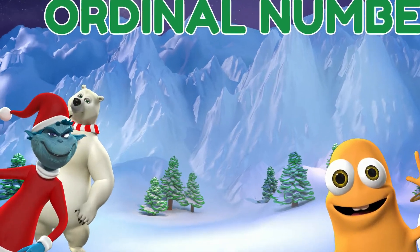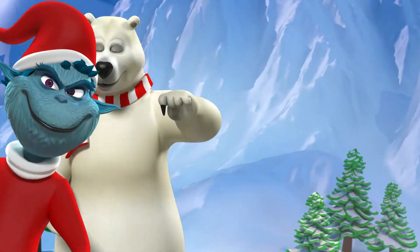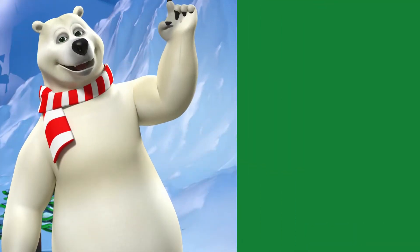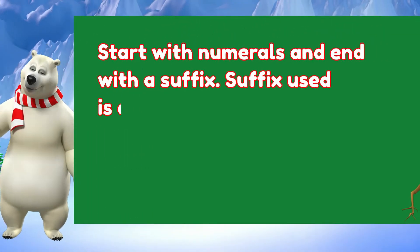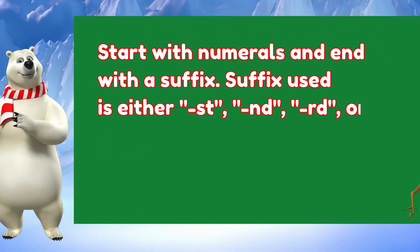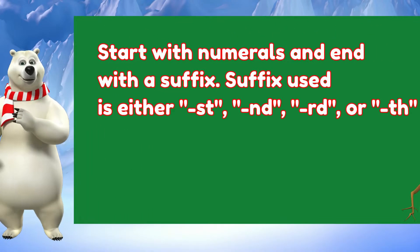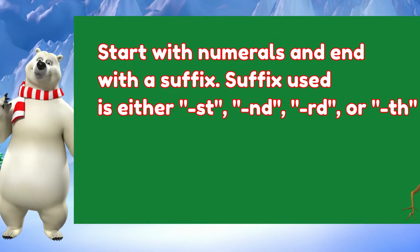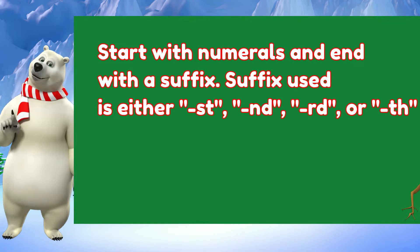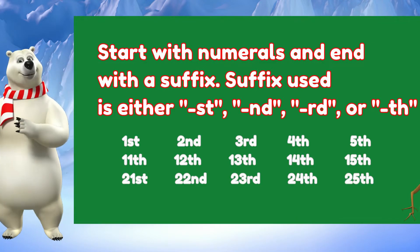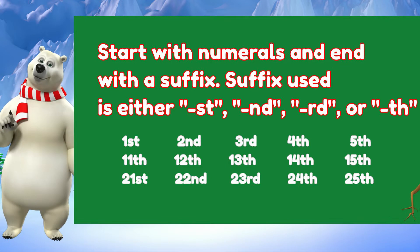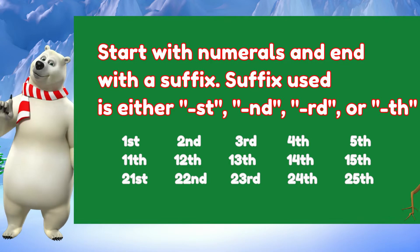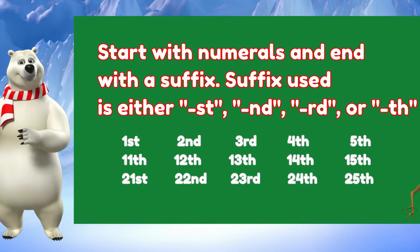How do you write ordinal numbers? Ordinal numbers, in numeral form, start with the numerals and end with a suffix. The suffix could either be st, nd, rd, or th, depending on the number or numeral.